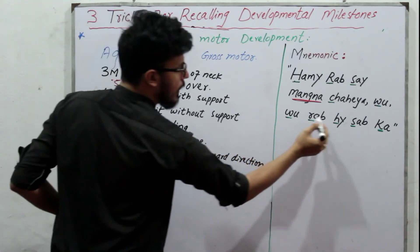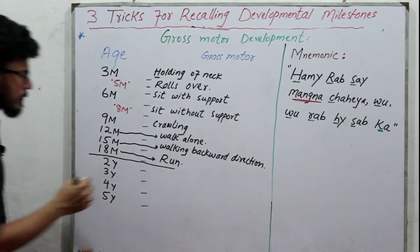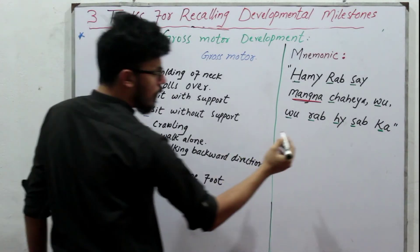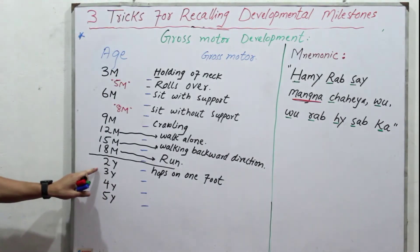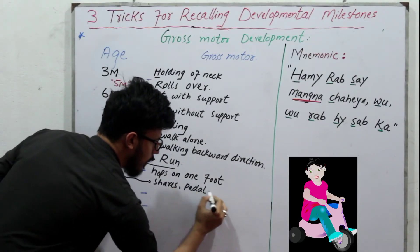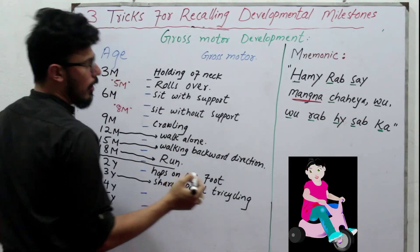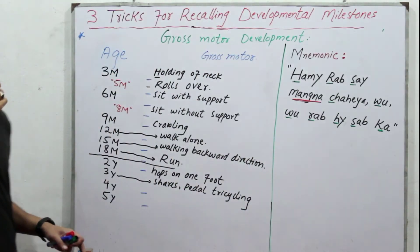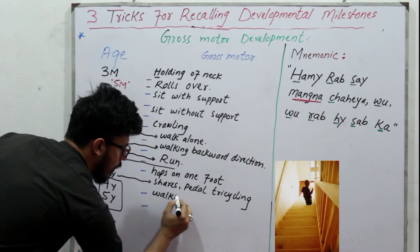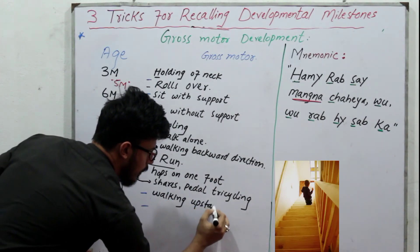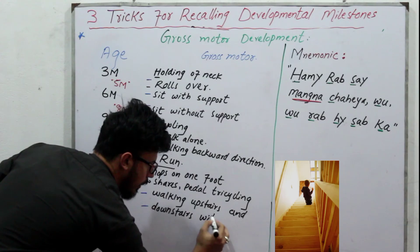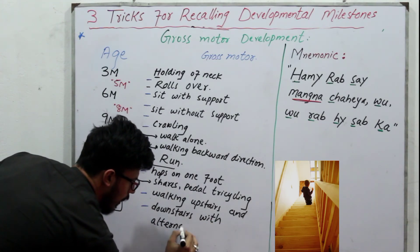At two years, after R there is H — H stands for hops on one foot. After H there is S, so at three years there is using shears and pedal tricycling. After S there is K, so at four and five years there is walking upstairs and downstairs with alternating feet.